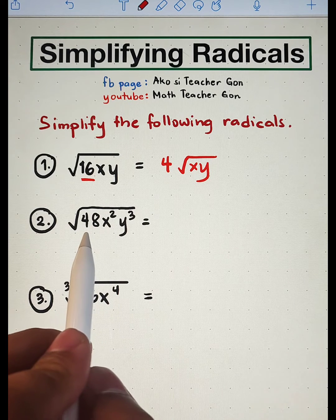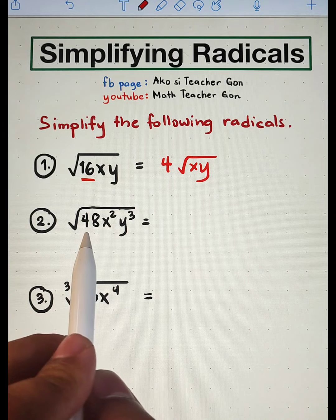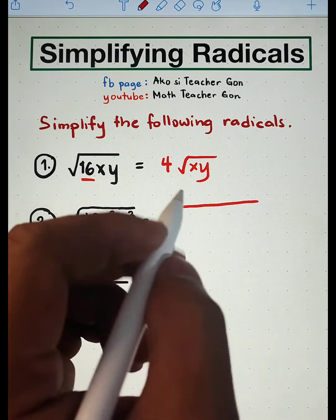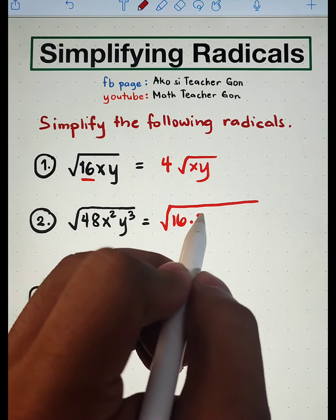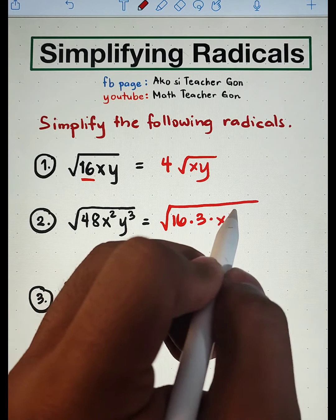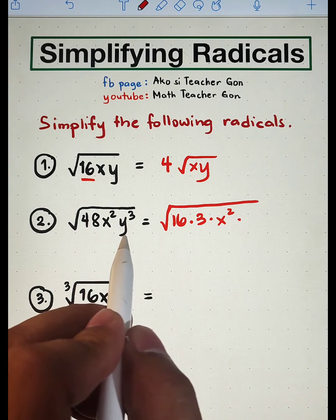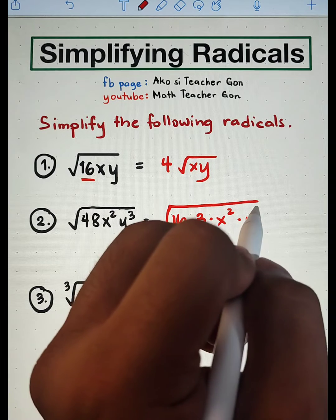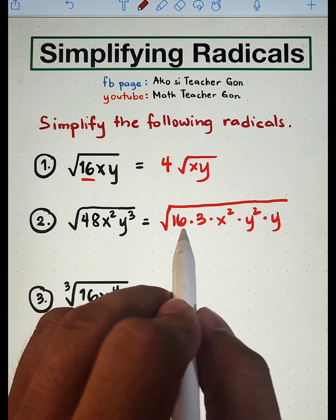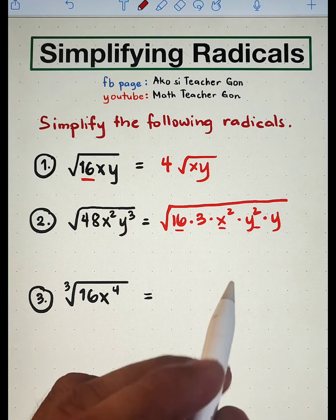But we have a way to simplify it. We can factor out 48 wherein one of the factors must be a perfect square. The factors are 16 times 3, wherein 16 is a perfect square. And we will copy x squared. Next, we will factor out y cubed as y squared times y. As you can see, we can get the square root of 16, x squared, and y squared. Now let's simplify.